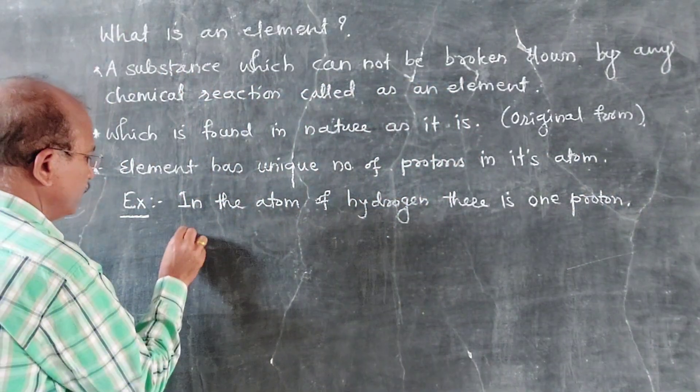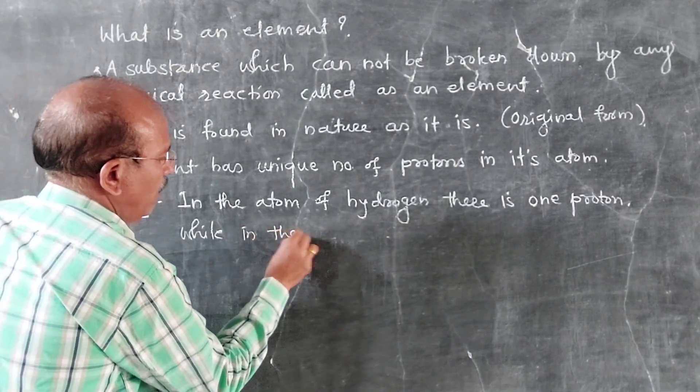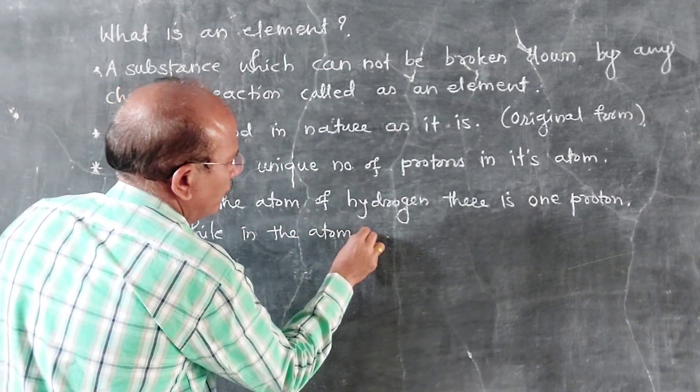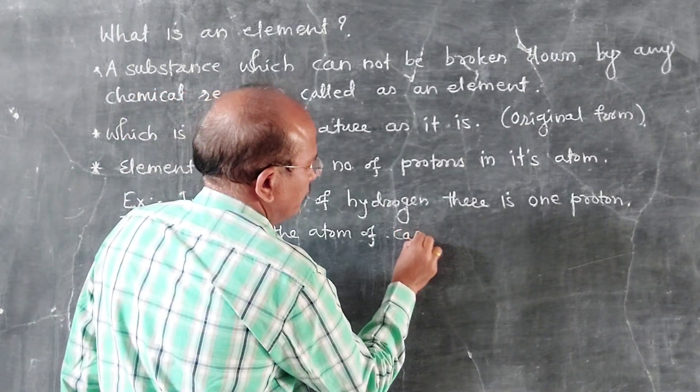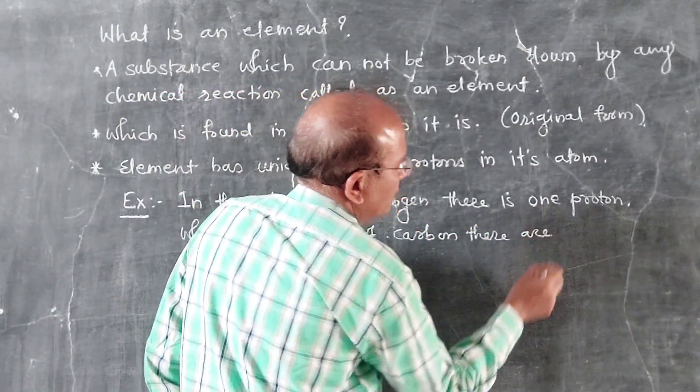Why? In the atom of carbon, there are six protons.